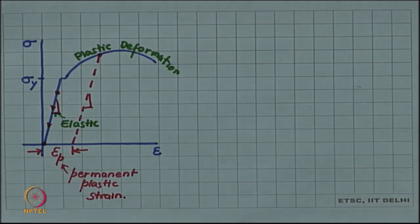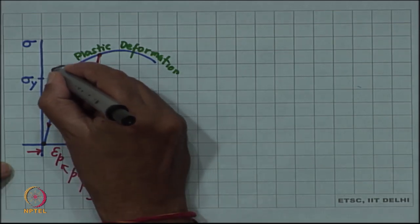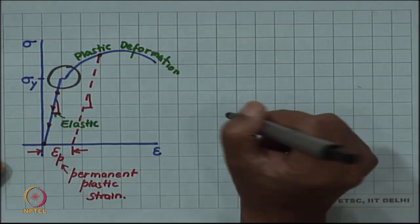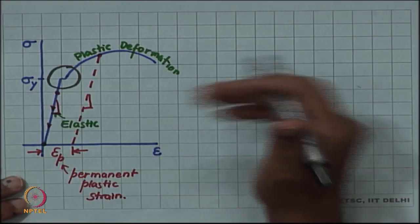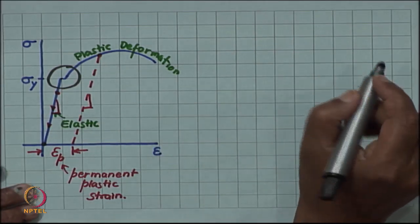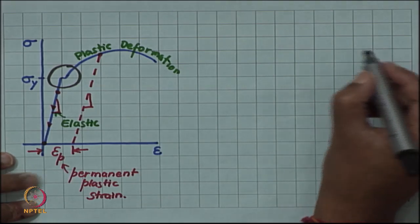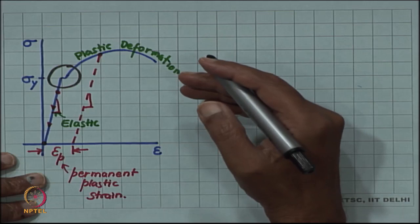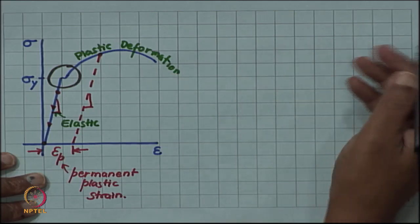Now, let us focus on this part of the curve, the transition from elastic to plastic. What really happens in terms of the internal structure of the material? What really happens when it undergoes a transition from elastic to plastic deformation?